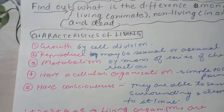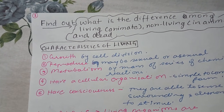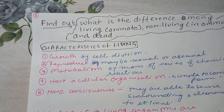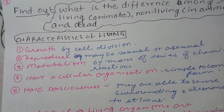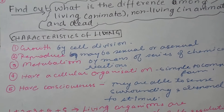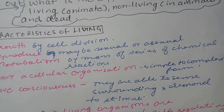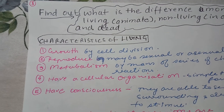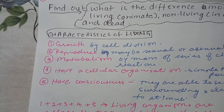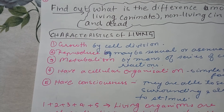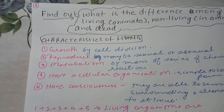Next is metabolism — the sum total of all chemical reactions. Anything that is living will have metabolism because it has to survive on its own and requires energy. There are so many chemical reactions operating in the body. Metabolism is divided into two parts. Catabolism includes all breakdown processes — for example, glycogen breaks down to glucose, and glucose breaks down further to carbon dioxide, water, and energy.